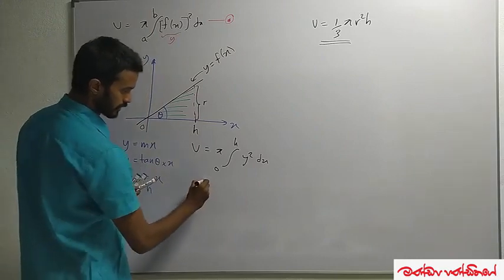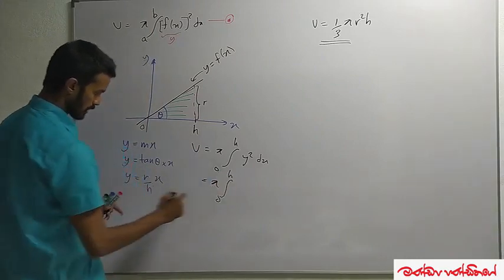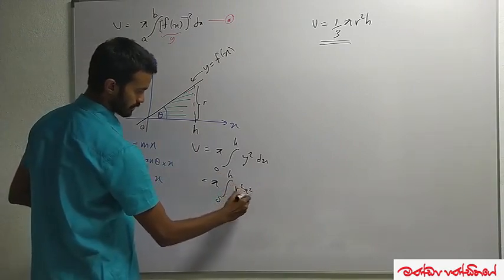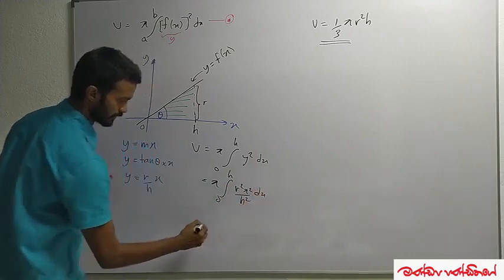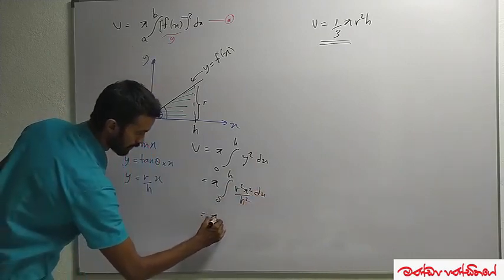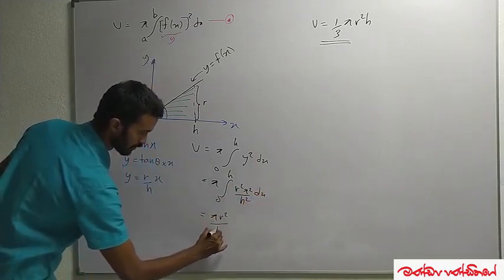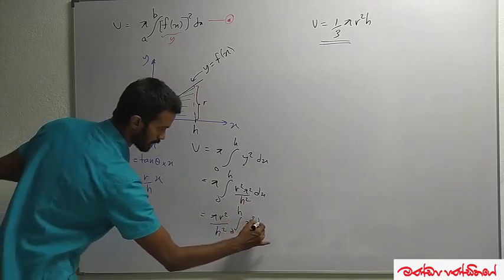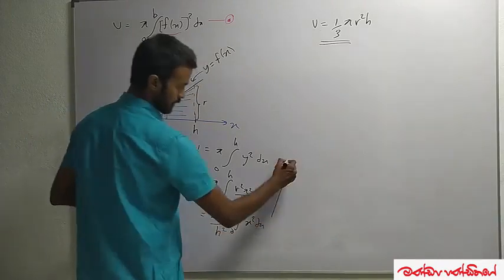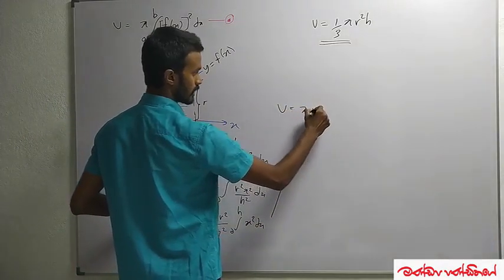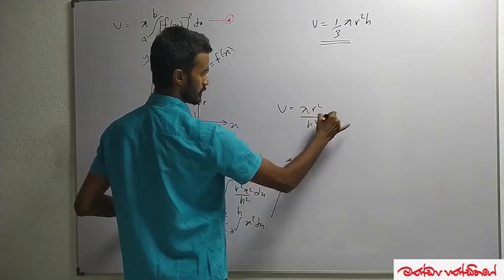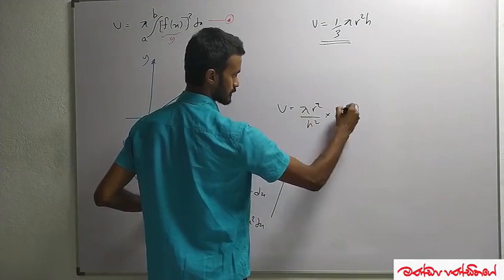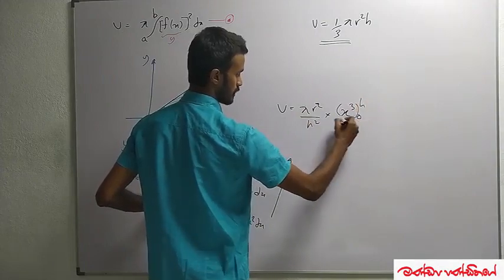5 is equal to y. x is equal to dx. 5 is equal to dx.